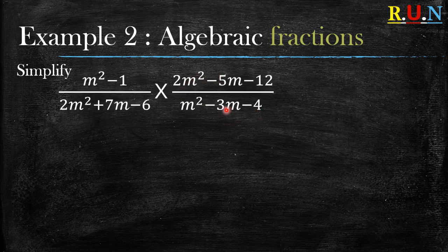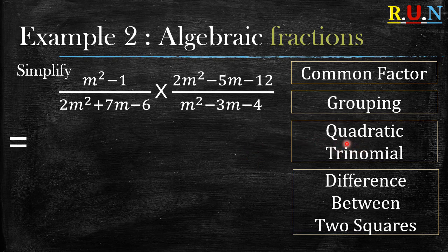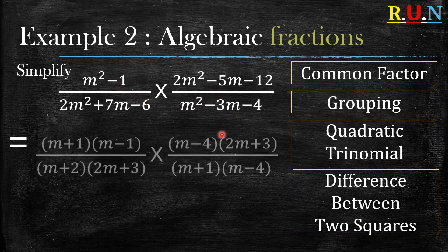So let's look at example number two. You are told to simplify this. Remember, these four factoring methods are very important — you should know them well. When we look at this question, m squared minus 1 is the difference between two squares, and then this numerator and both denominators are quadratic trinomials.